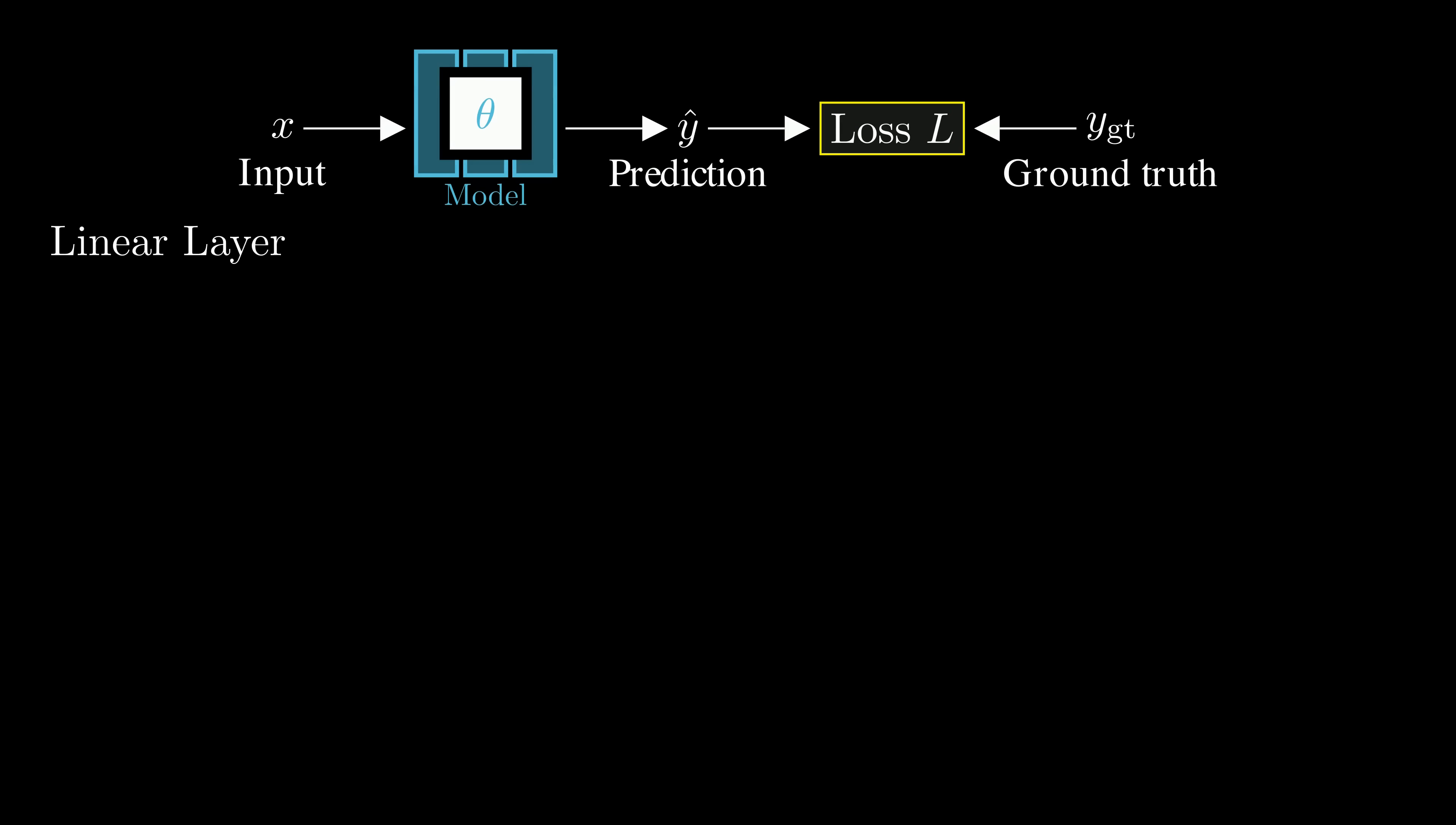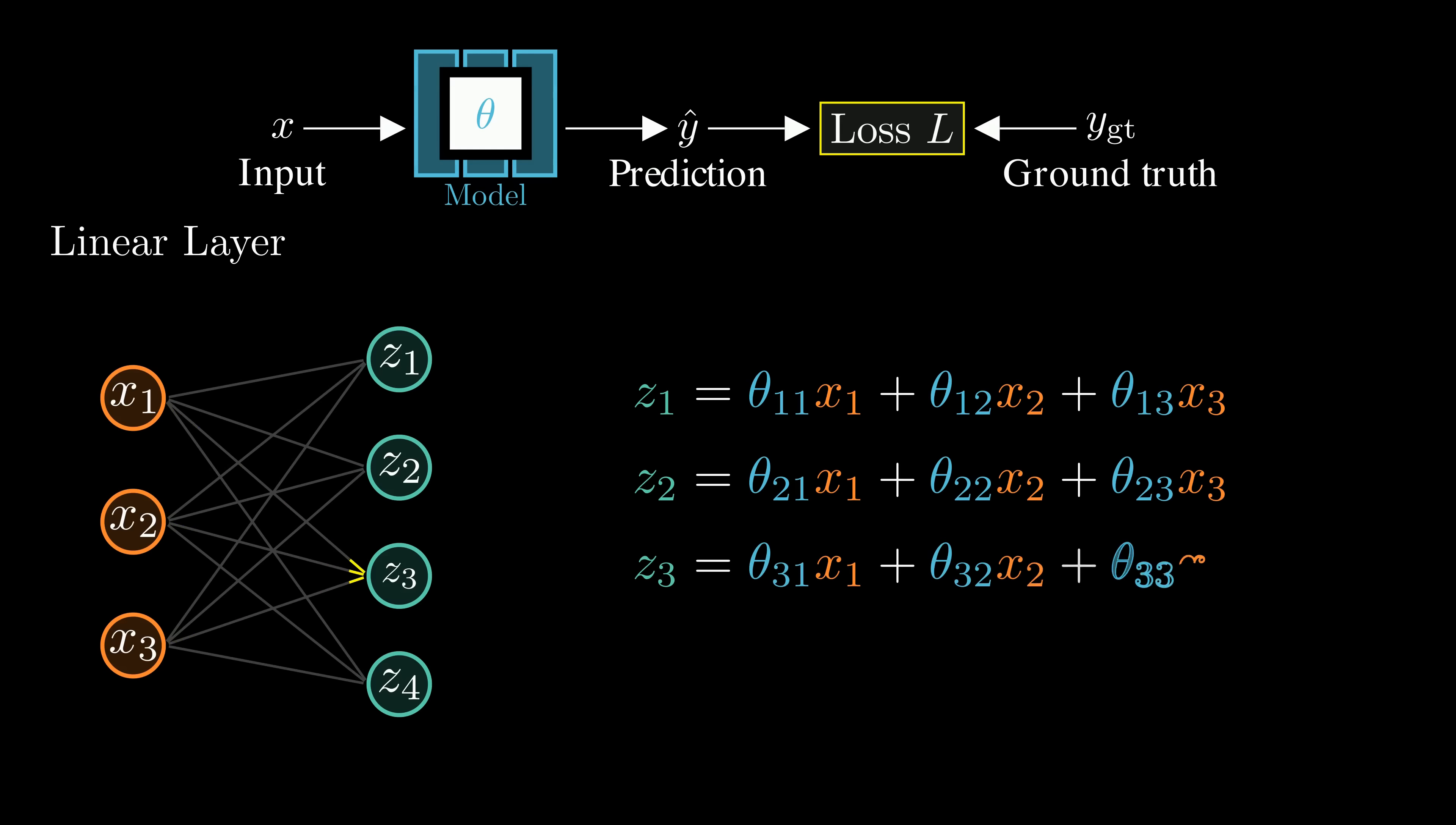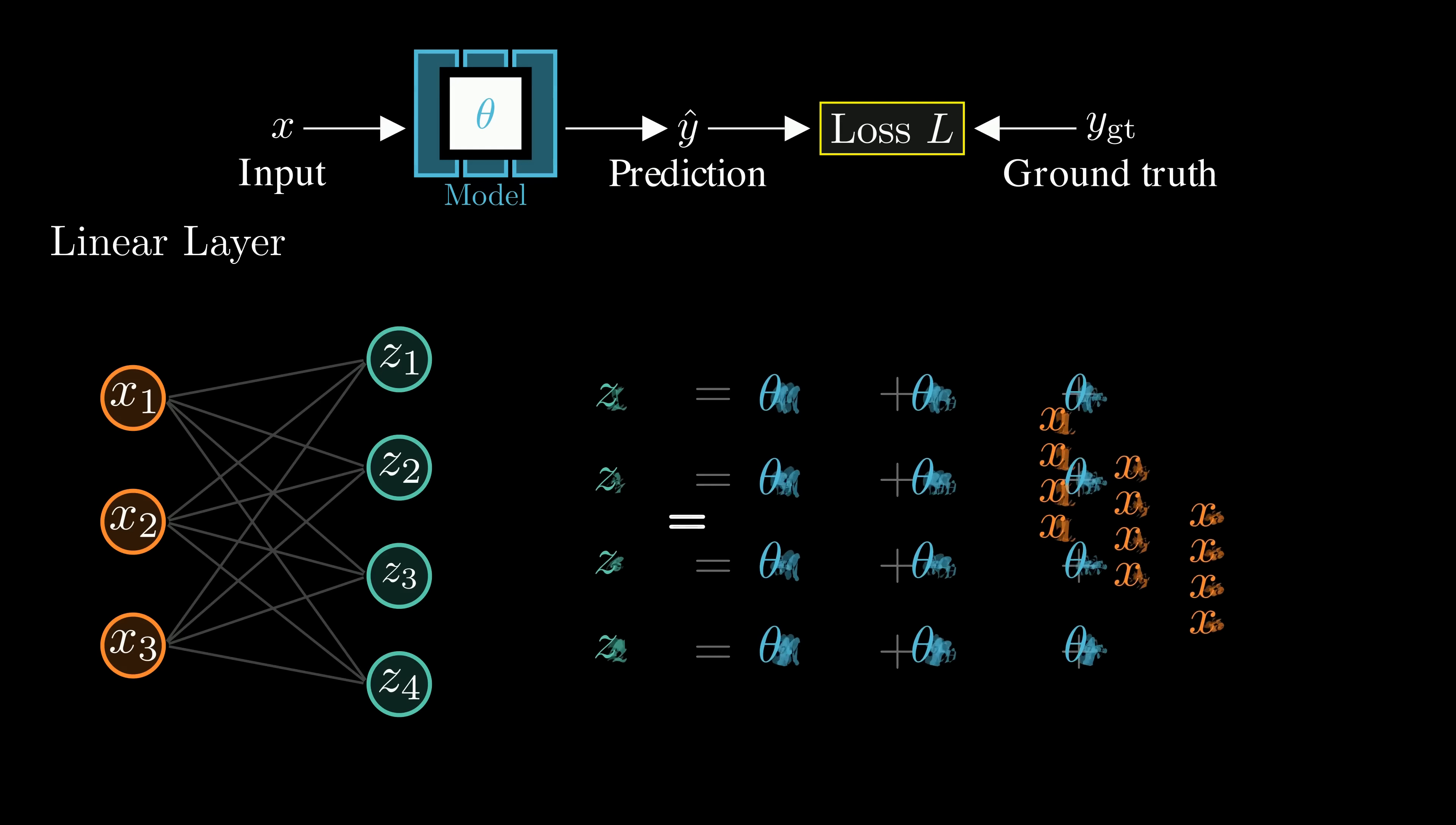Linear layers are especially common in neural networks. Here, a linear layer transforms the input vector x into an output vector z. Each output z is just a weighted sum of the input x, where the weights themselves are the trainable parameters. We can describe this input-output relationship concisely using a matrix vector product.